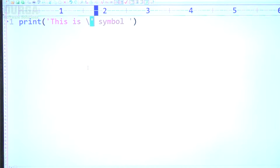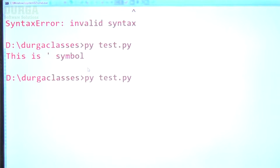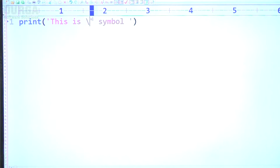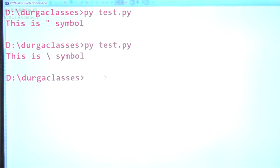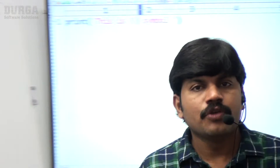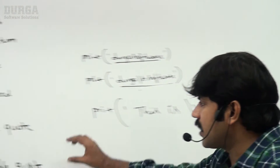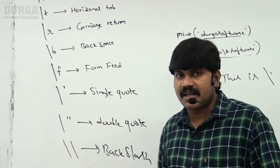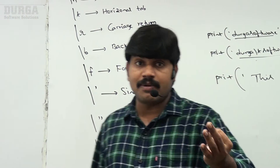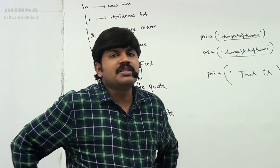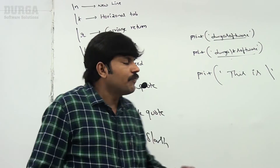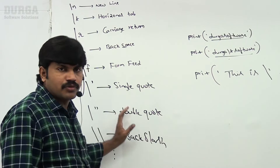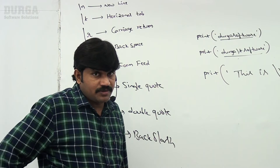Similarly, if I want to use double quote symbol, I use backslash double quote. If I want to use backslash as a symbol, I use backslash backslash. So if you want to use single quote, double quote, or backslash as a symbol, these escape characters are required because they have special meaning in most programming languages.